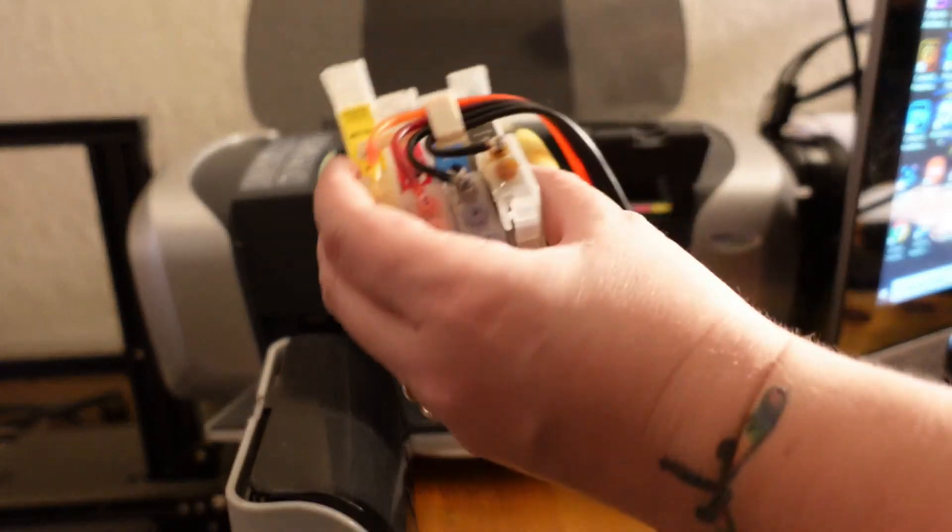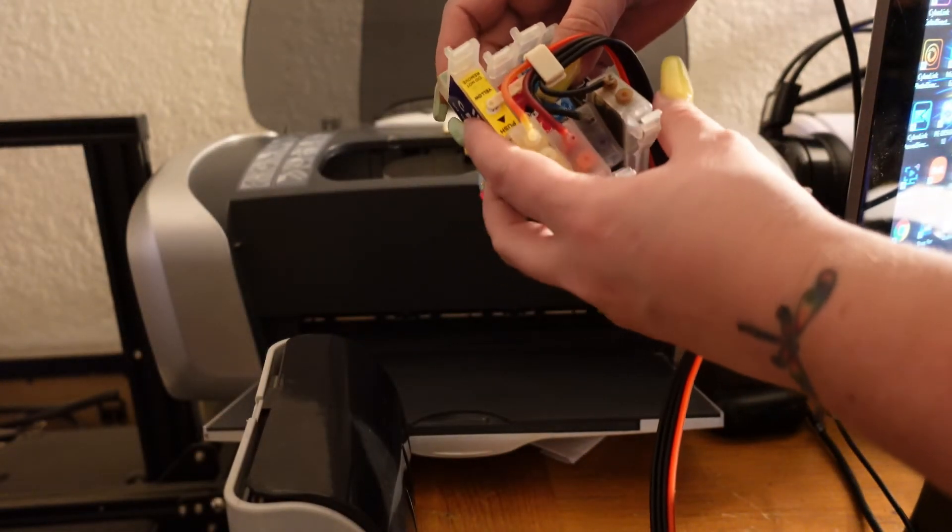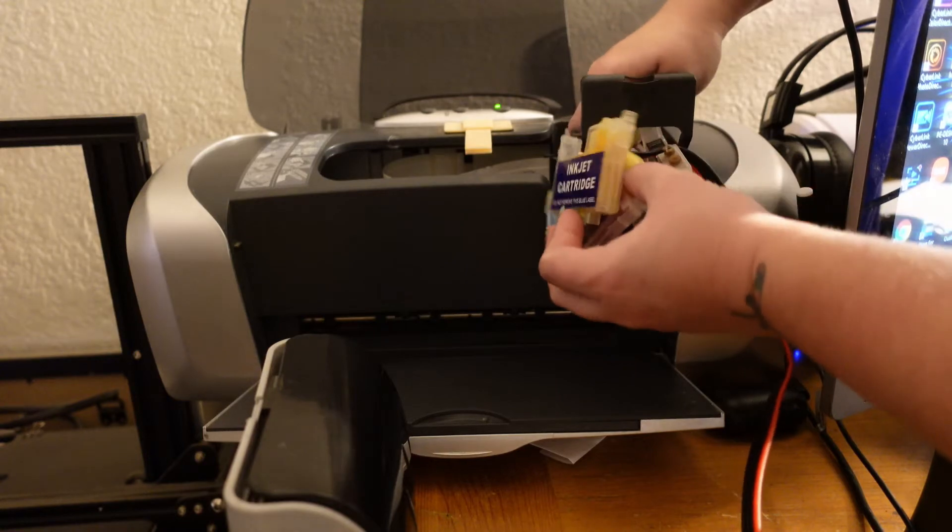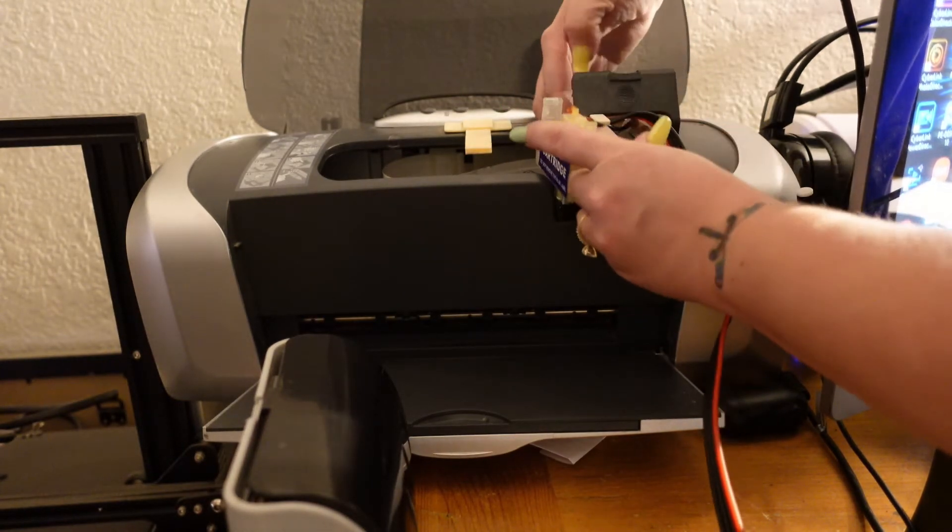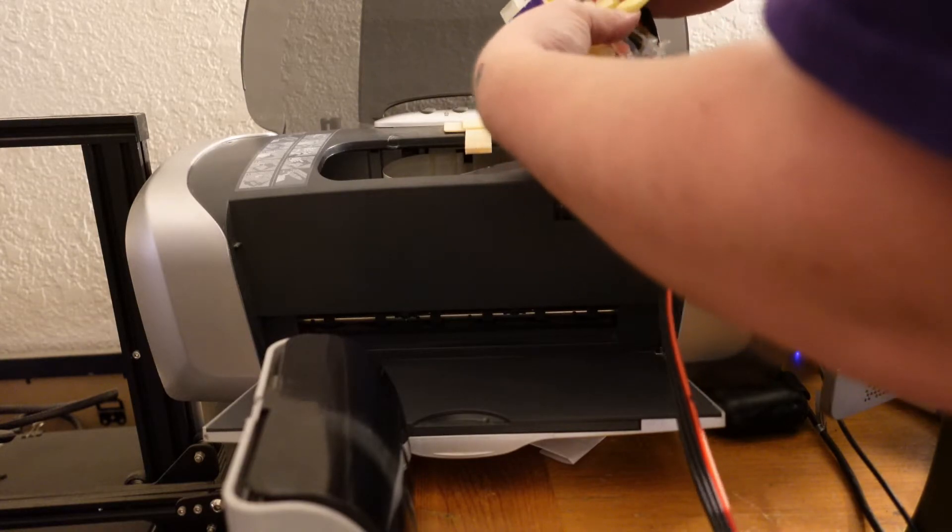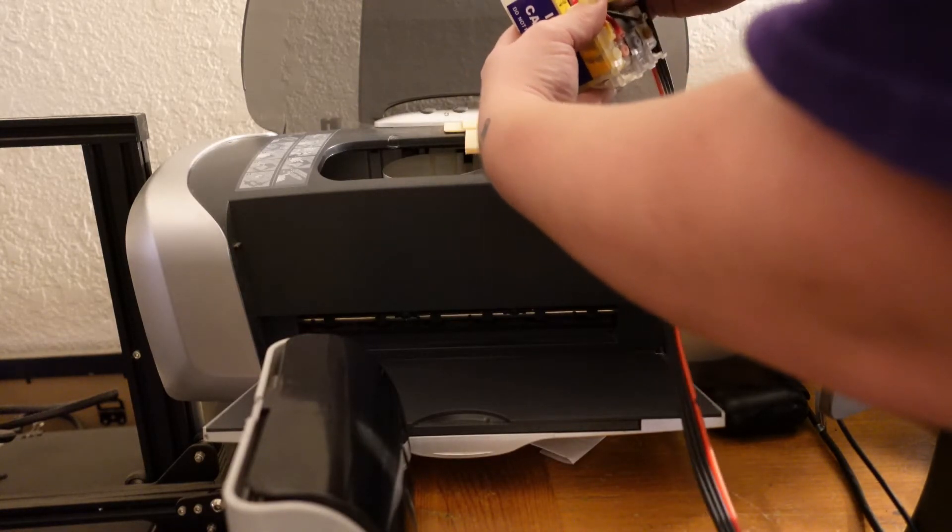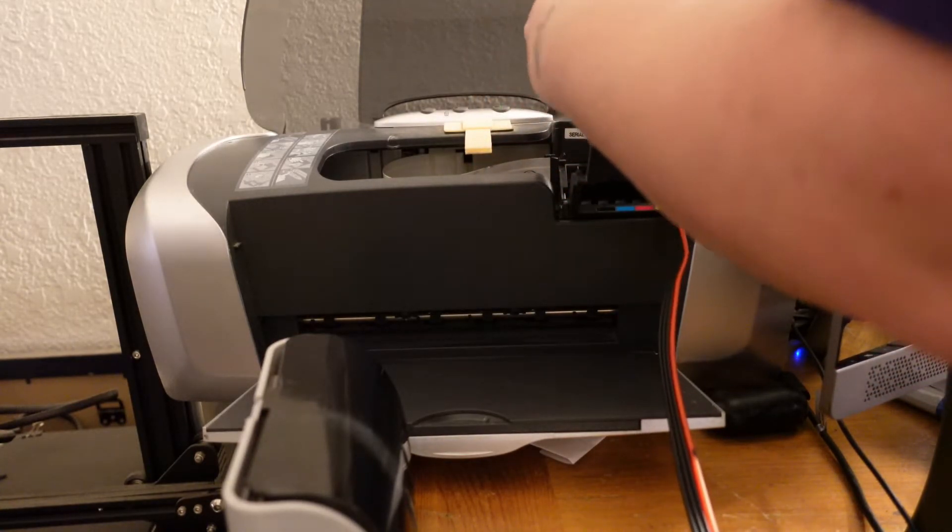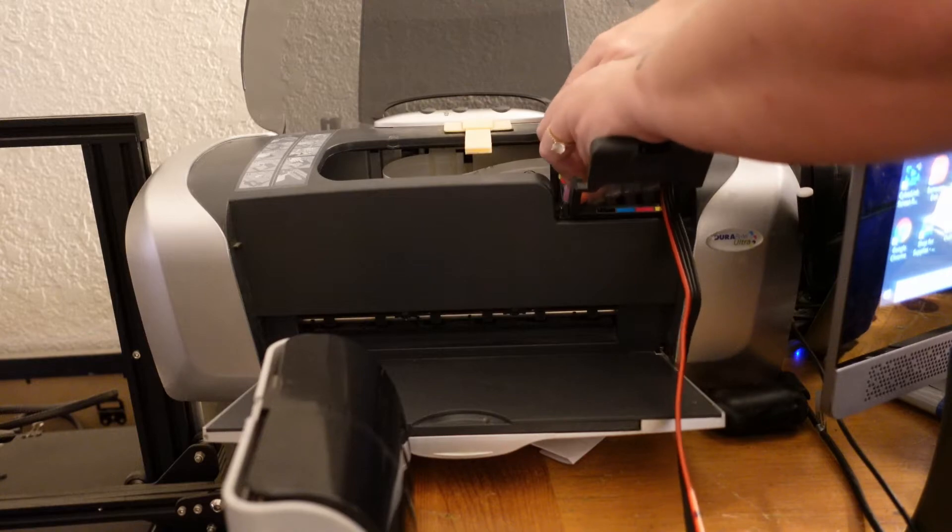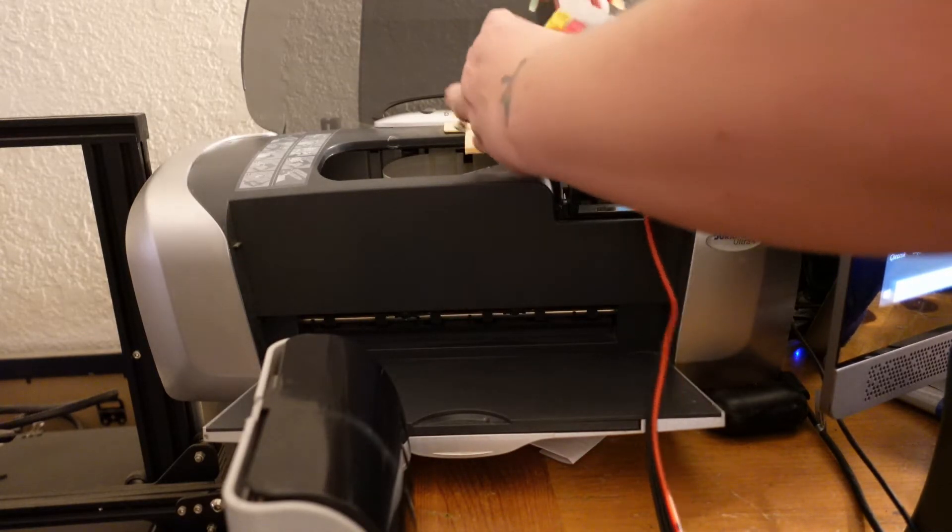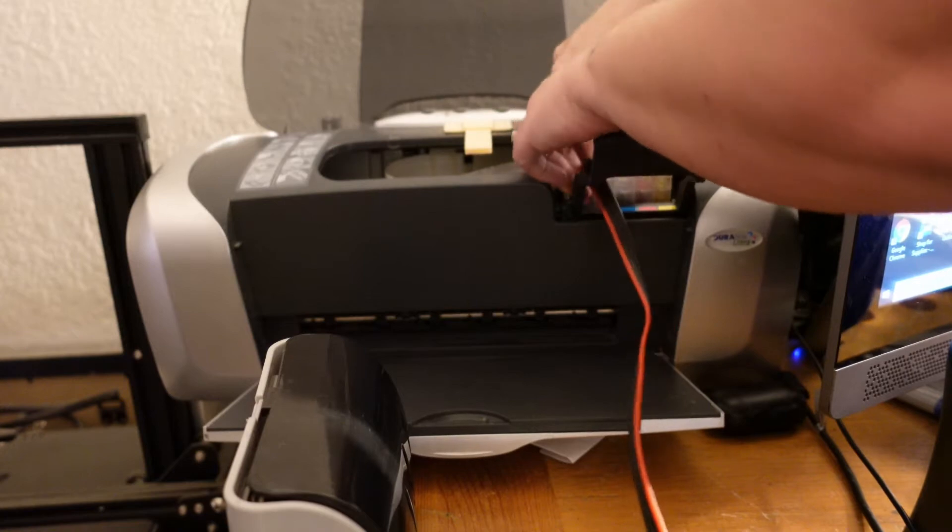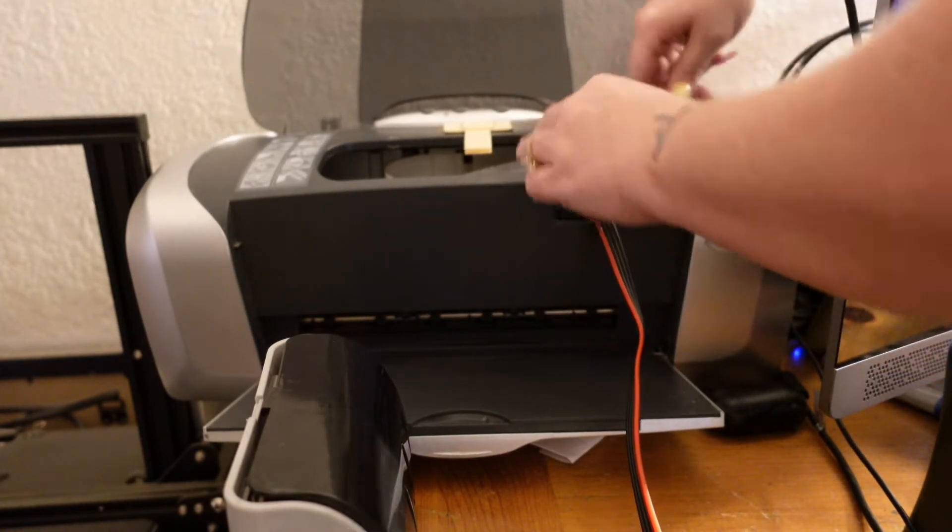All right. So we're back at the printer now. And we are going to take our cartridges and disconnect them from the mechanism that holds them together. And we are going to insert them through the door. Now you can take off the door, but I'm not going to. I leave mine on. We will put them back on the mechanism just to make sure that they are in the correct place. And we will insert them as you would in the ink cartridge. All right. We'll snap them in place and close that.